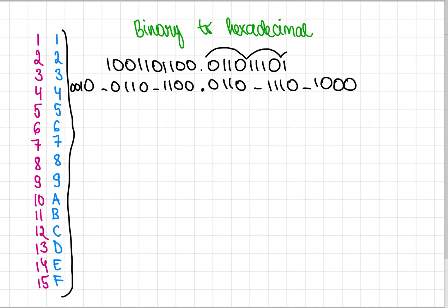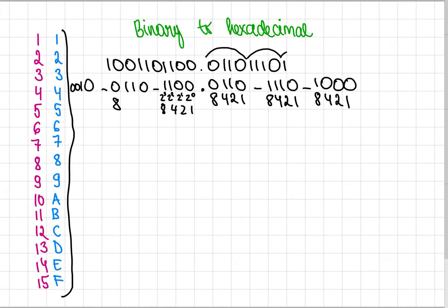And again here we write out two to the power of 0, two to the power of 1, two to the power of 2 and two to the power of 3. Or I like to skip that and just write 1, 2, 4, 8. So 8, 4, 2, 1 — 8, 4, 2, 1 — 8, 4, 2, 1 — 8, 4, 2, 1. And in each group again you need a sum.